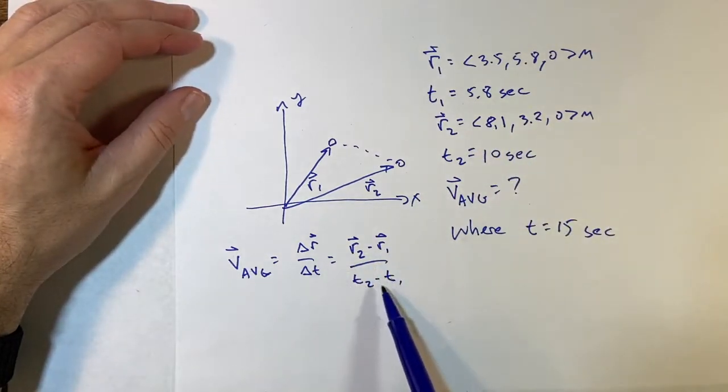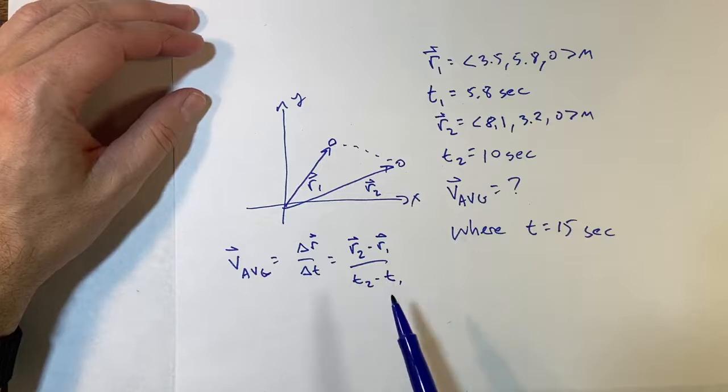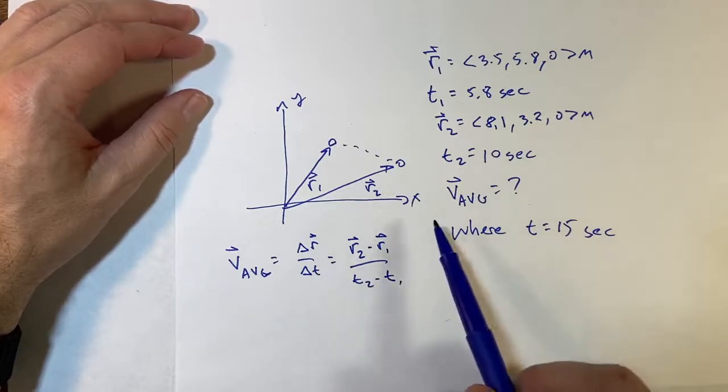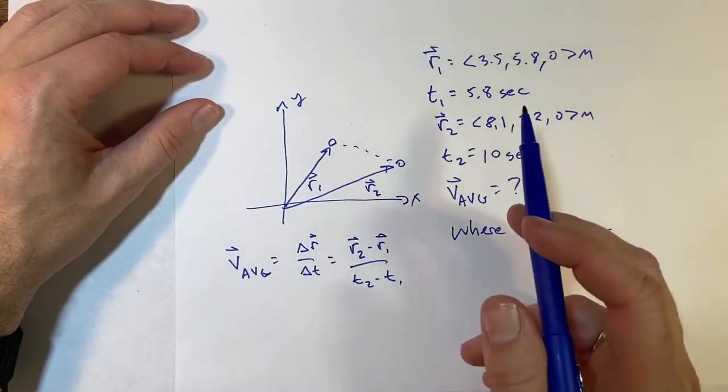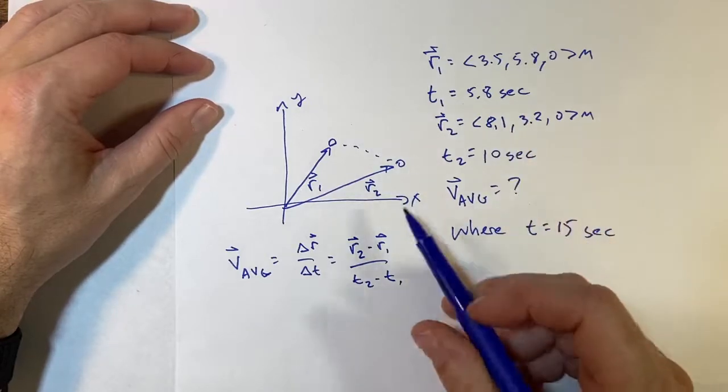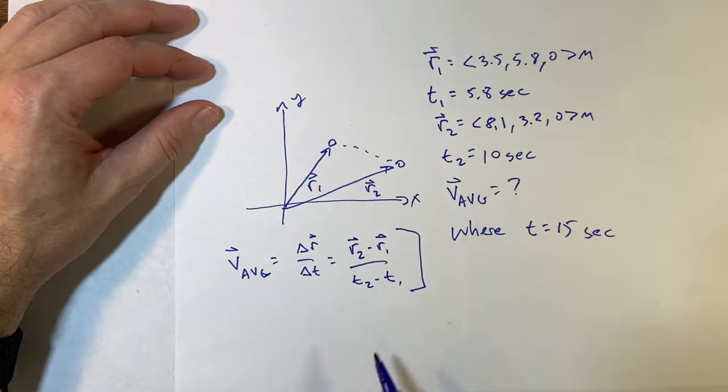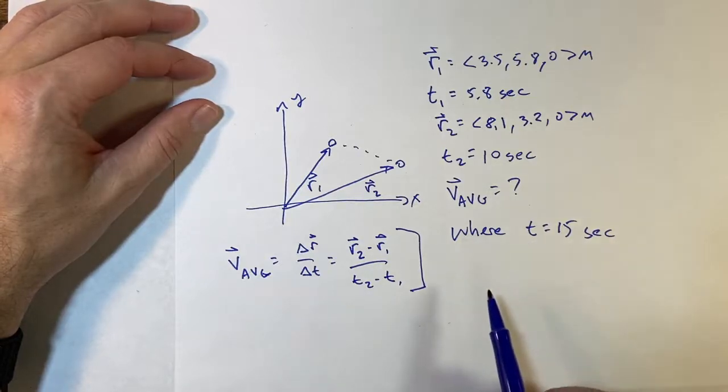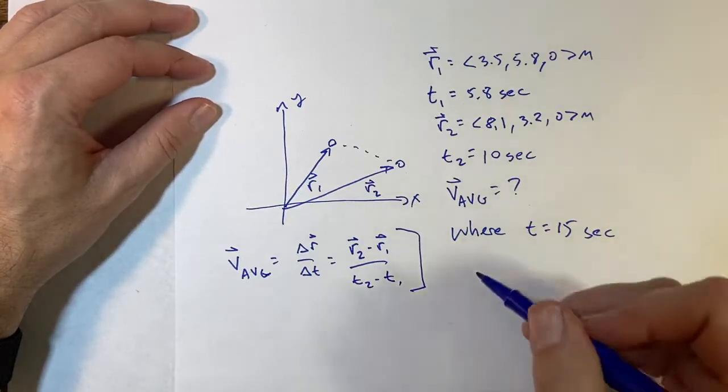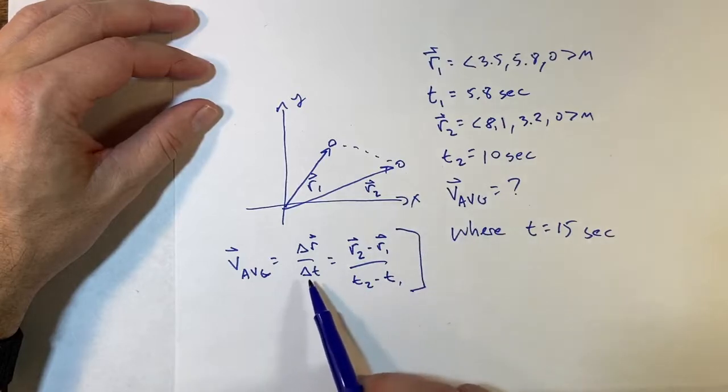Okay, so I know these values, right? I know how to subtract these vectors, I can get a vector up here. I know how to subtract these scalars for time, I can get a time down there. That's going to be my average velocity. I'm not going to put the numbers in because I'm going to do it in Python, but I'm just letting you know this is what you would do. So we're going to get there.